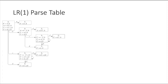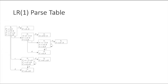We have created the item sets and we need to generate the parse table the same way we did in SLR. The only difference is that when we enter the reduce actions, we have to note where we are reducing. We have states zero to nine, so ten states total.